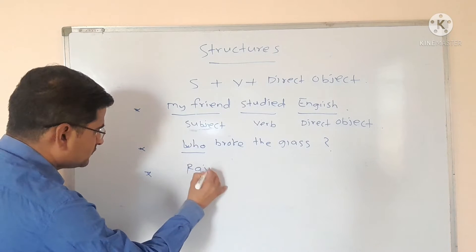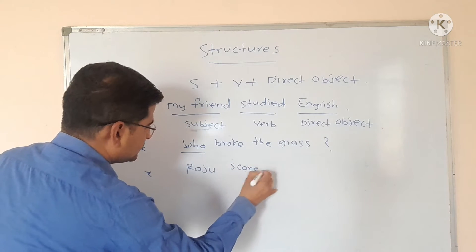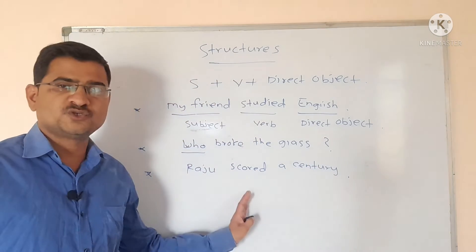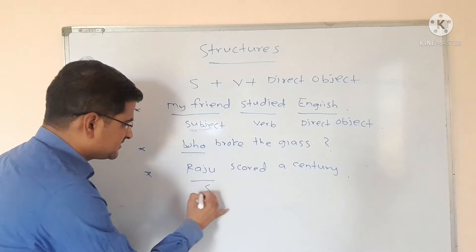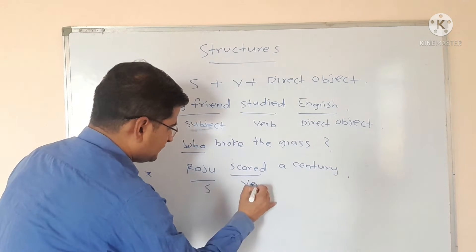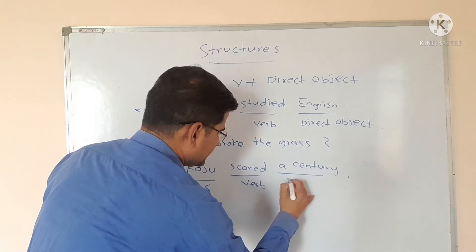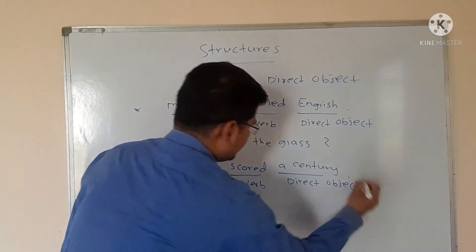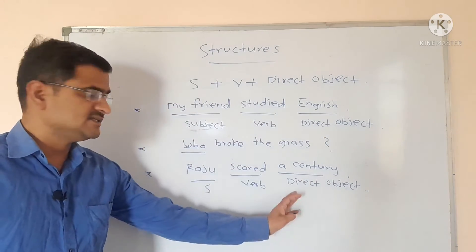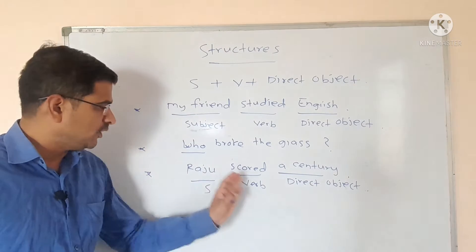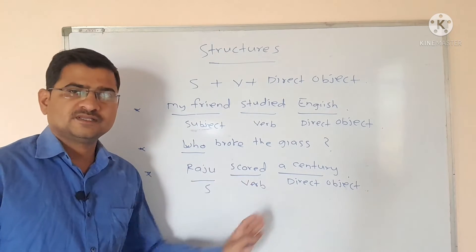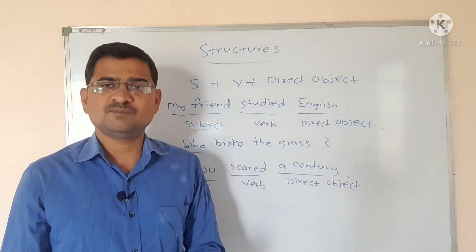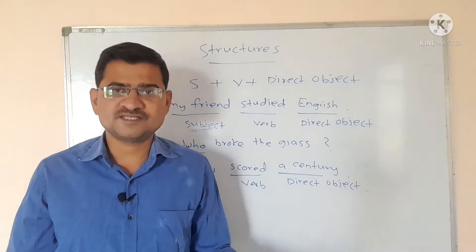Raju scored a century. Here, 'Raju' is the subject, 'scored' is the verb, and 'a century' is the direct object. What did Raju score? The answer is a century. Therefore, a century is an example of a direct object. Very simple.